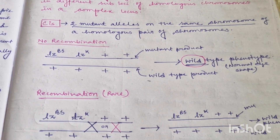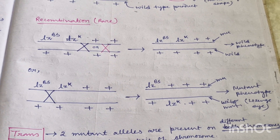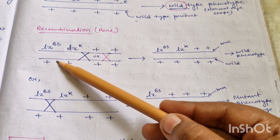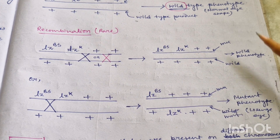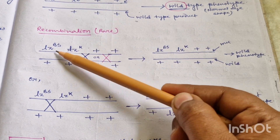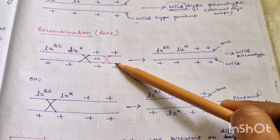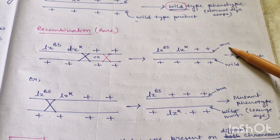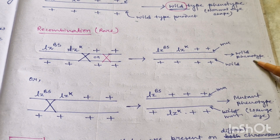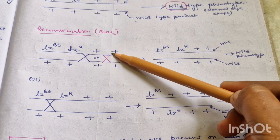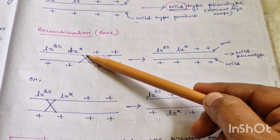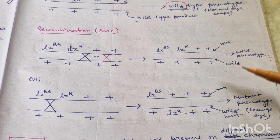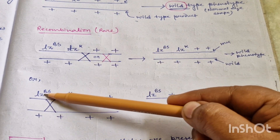If recombination occurs in cis combination but between any site except the two mutant sites, you will get wild type phenotype like the non-recombining ones. For example, one recombinant product will be LZBS, LZK, then ++, giving a mutant product, and another will be ++++, giving a wild type product. Since wild type product is dominant over mutant, overall wild type phenotype will be there. But if recombination occurs between the two mutant alleles, one product will be LZBS+ ++ and another will be +LZK+ +, both are mutant forms, so only mutant phenotype will be shown — lozenge-shaped eyes.